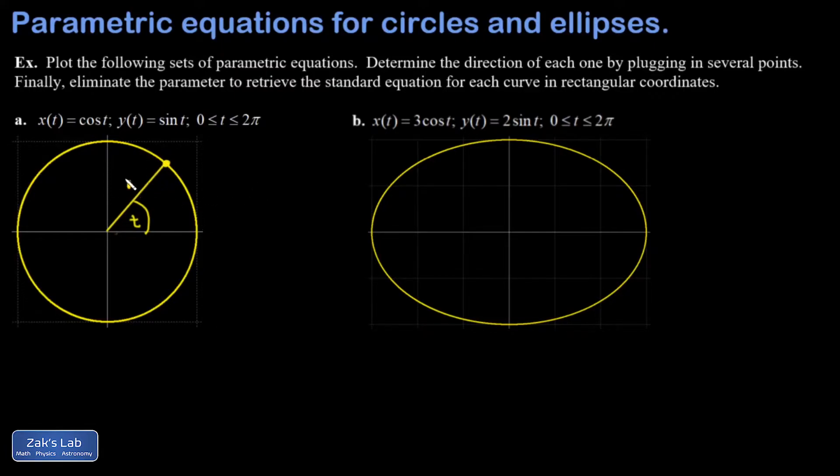So we're really just describing the points on the unit circle and tracing those out as the angle goes from zero to two pi. I'm asked to determine the direction of the parametric curve by plugging in some points.